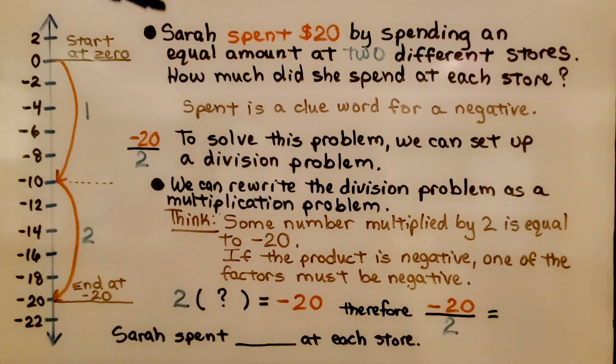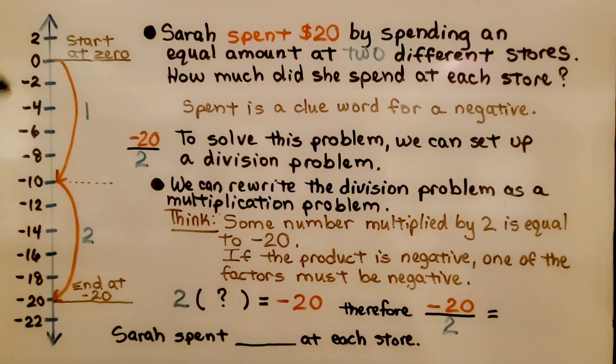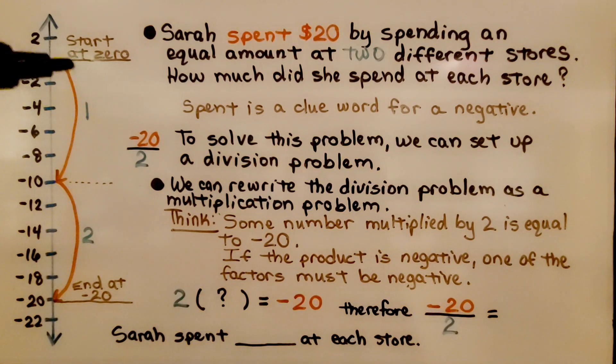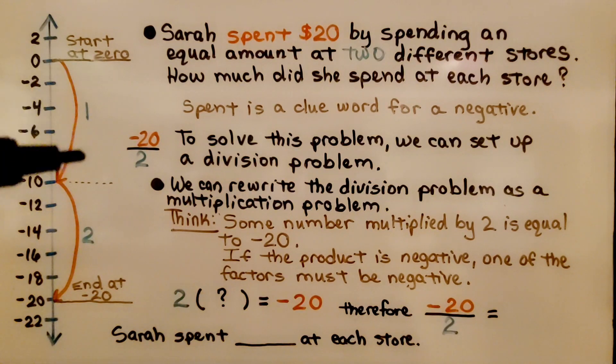This problem says Sarah spent $20 by spending an equal amount at two different stores. How much did she spend at each store? Using a vertical number line, you can see it skip counts by twos and it's going down into the negatives. We can start at zero. We're going to end at negative 20 because that's how much she spent. And we're going to make two even amounts, two equal amounts. That means there's a negative 10 and another negative 10.